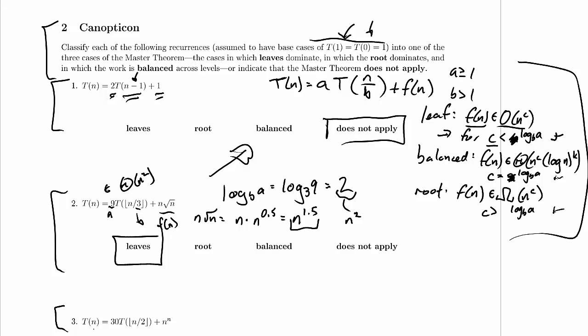In this case, we've got T(n) is equal to 30T of the floor of n over 2 plus n to the n, and the question is, do we have something that is of the form we can apply the master theorem to? Well, here's the a, times T of n over b, here's the b, plus f of n, here's the f of n. Yes, it is.